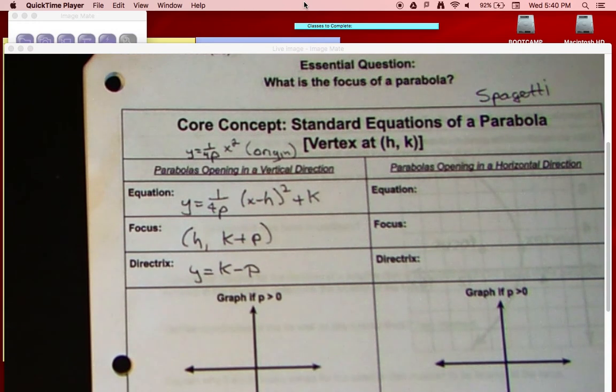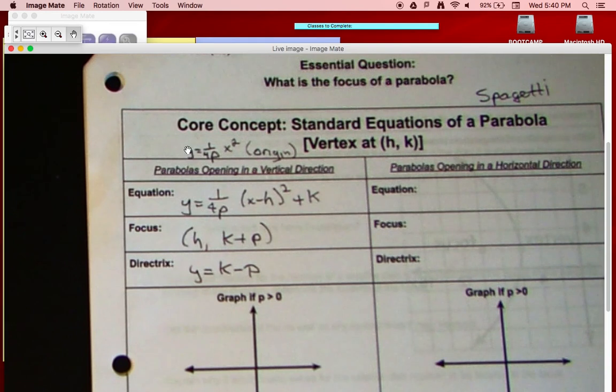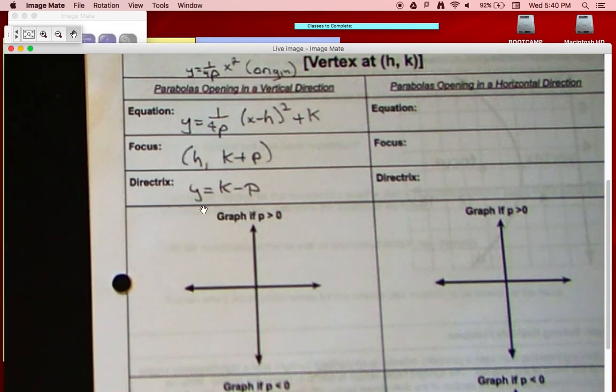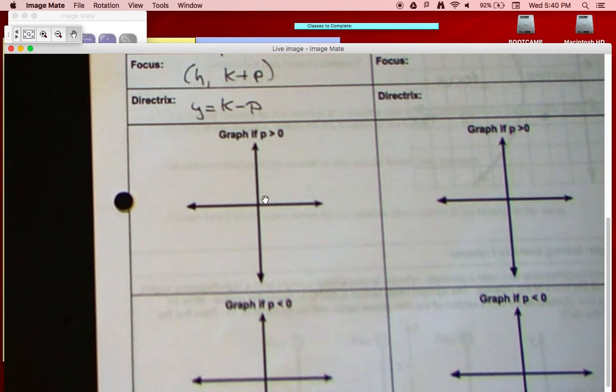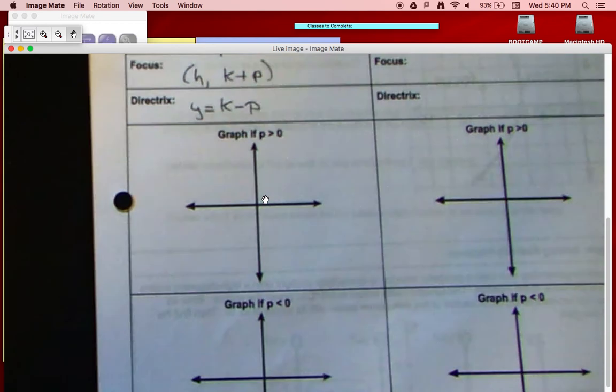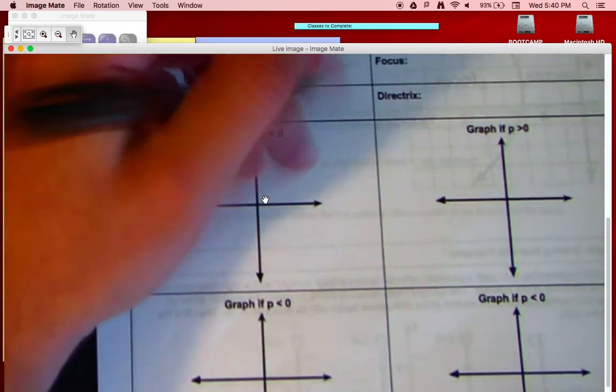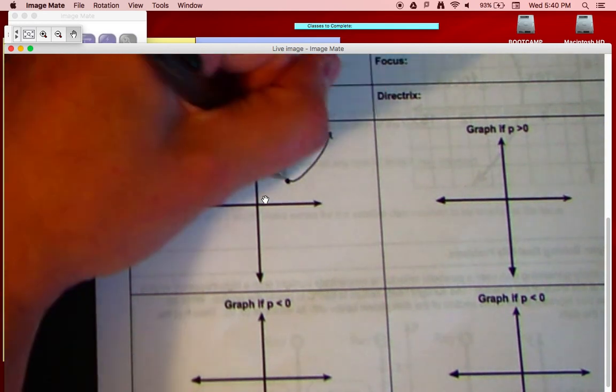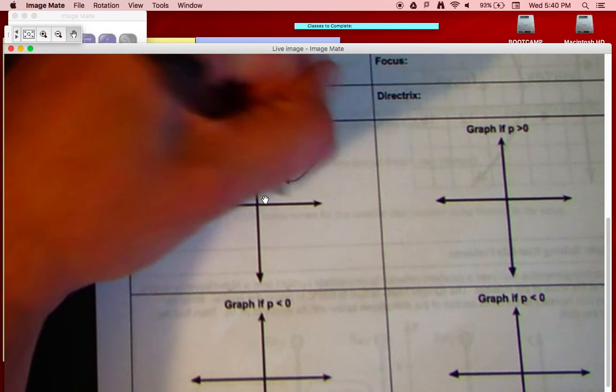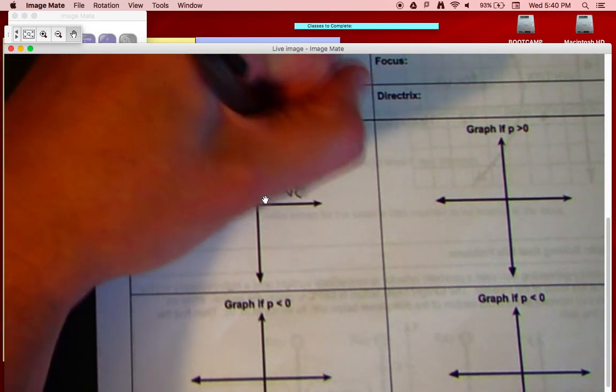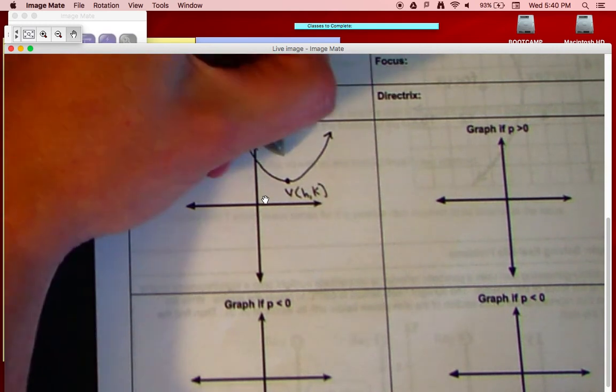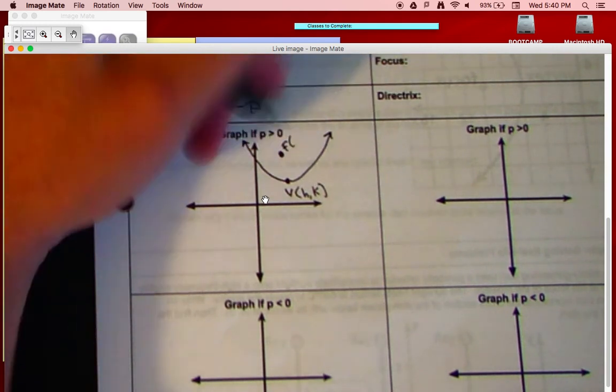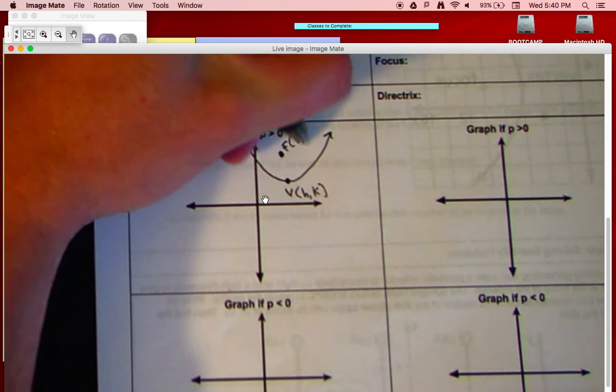Alright, what does the graph look like? The graph, if p is greater than 0, the thing you have to remember if p is greater than 0, is that it's going to open upward. So we've got our vertex right here, and we've got our parabola right there. So that's our vertex, which has coordinates of h, k. We have our focus, which is going to have coordinates of h, k plus p.